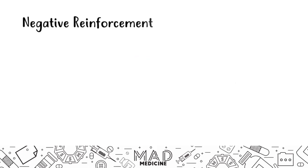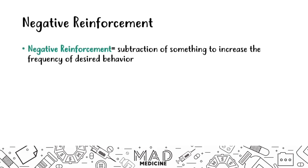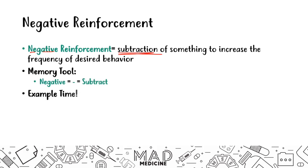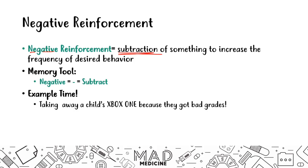With negative reinforcement, you are subtracting something to increase the frequency of the desired behavior — remember, negative means subtraction. The example here is taking away a child's Xbox because they got bad grades. The subtraction of the Xbox would increase the frequency of good grades, because the child wants to earn it back.